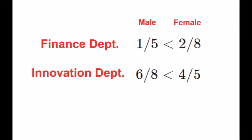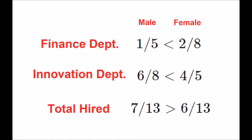If you combine these two inequalities, we get a surprising result that for both departments, seven out of 13 males were hired and six out of 13 females were hired. You see that after combining both inequalities, the trend has been reversed. You can clearly see that more males were hired as compared to females. How can it be that each department favors women applicants and yet overall men got better than women?